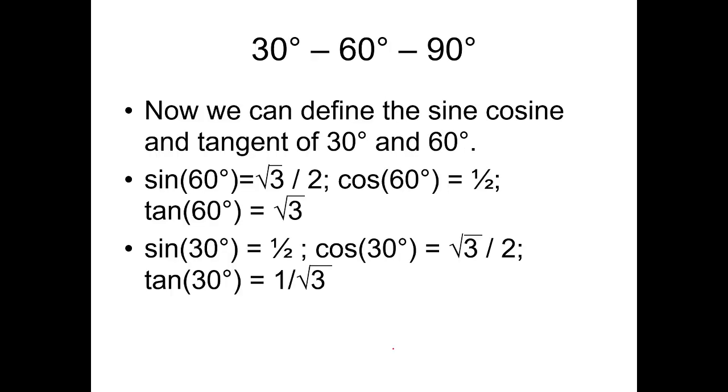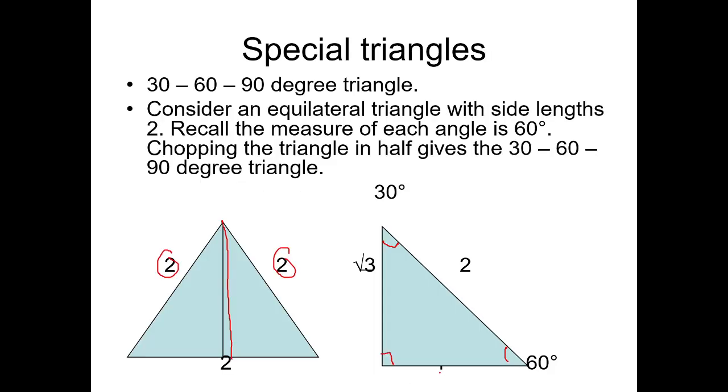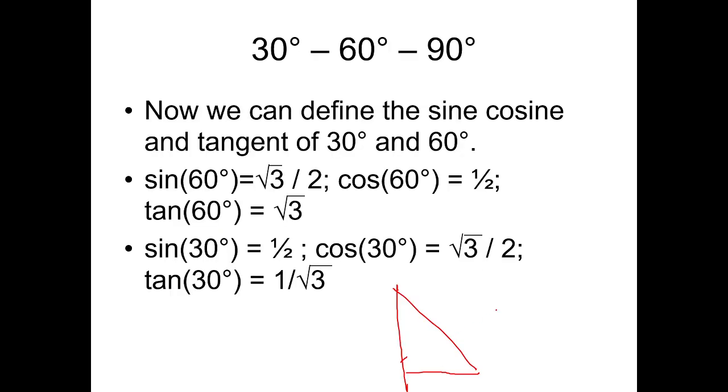Now, we can define the sine, cosine, and tangent of 30 degrees and 60 degrees. Sine 60 is equal to opposite over hypotenuse. Let's redraw the triangle. It's 2 square root of 3, 2, then square root of 3, and this is 30 degrees, this is 60 degrees.